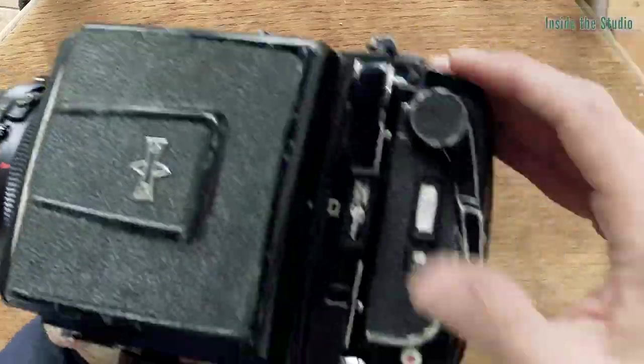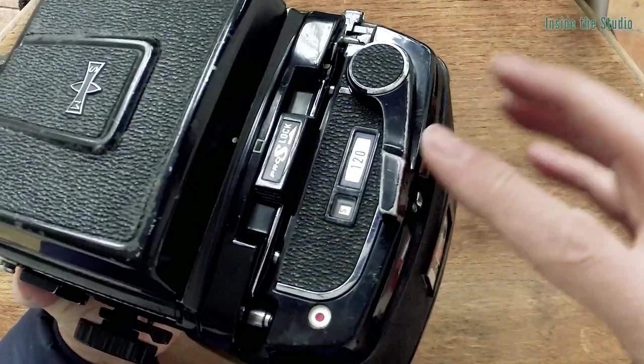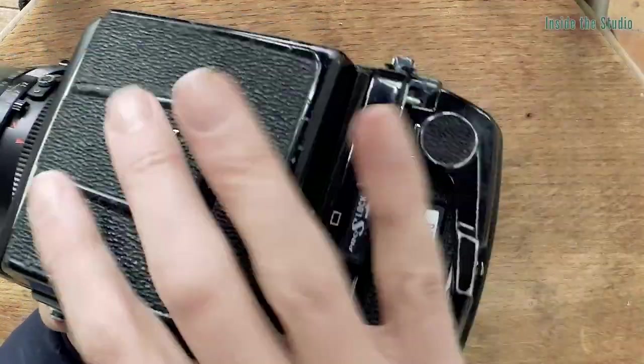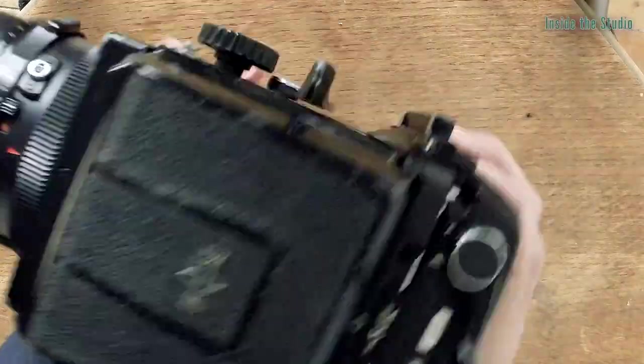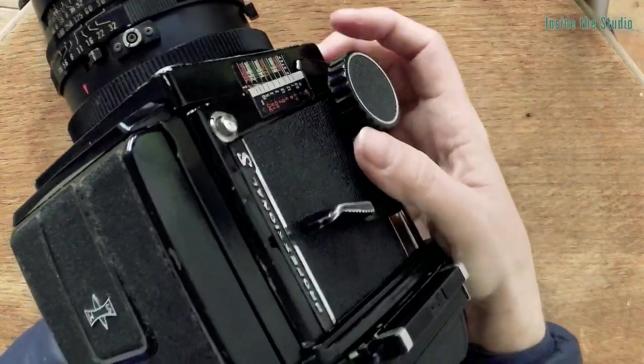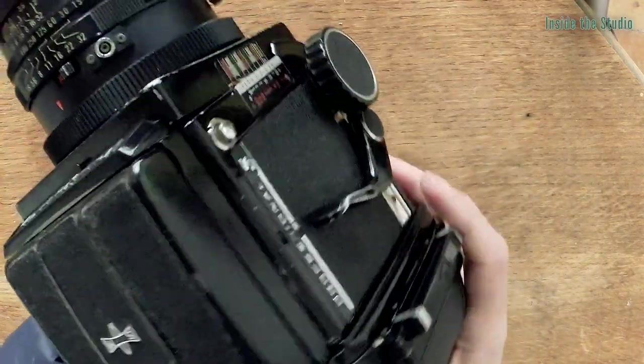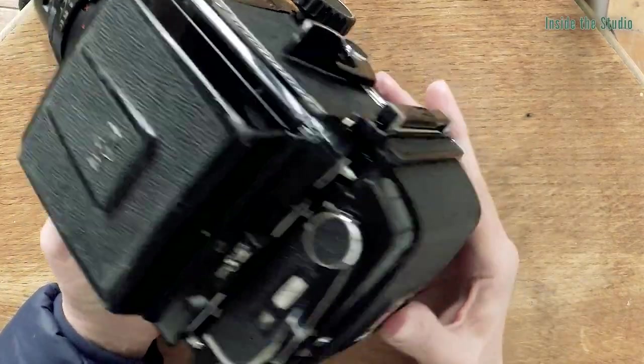This is the film wind-on, and the interesting thing is because the film is in a different container from the front, everything you do you have to do twice. You wind the film on, but then you also have to re-cock the shutter here because they are not connected in the same way as in a 35mm camera.